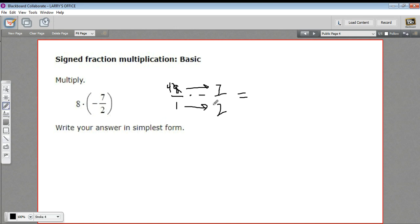8 divided by 2 is 4. That makes this 2 disappear. Now I just have 4 times 7 over 1, so 28 over 1.